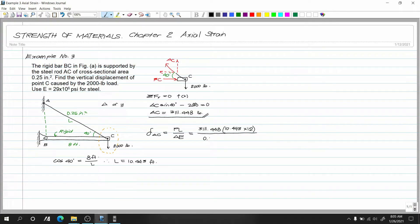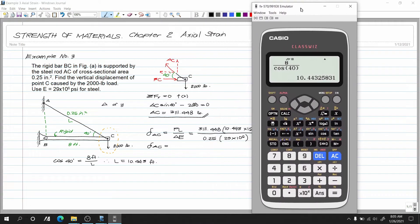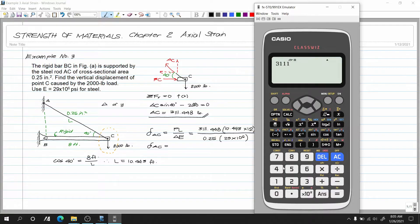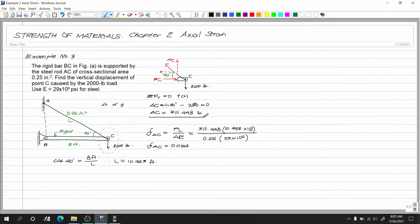So yung over area, ang area natin is 0.25. Ang ating E, 29 times 10 raised to 6. So ngayon, ang ating deformation from A to C. Tensile to eh. So positive, mag-i-elongate sya. So 3111.448 multiplied by 10.443 multiplied by 12 over 0.25 multiplied by 29 times 10 raised to 6. So 0.054 inches. Or inch pala.